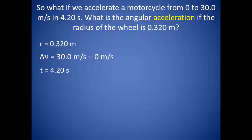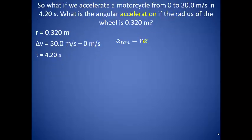So what if we accelerate a motorcycle from 0 to 30 meters per second in 4.20 seconds? What is the angular acceleration if the radius of the wheel is 0.320 meters? Well, we know that angular acceleration is equal to the tangential acceleration divided by the radius. We know the radius, so if we can find the tangential acceleration, we can figure out the angular acceleration. We're in luck because tangential acceleration is the change in velocity over the change in time, both of which we can determine from our problem.